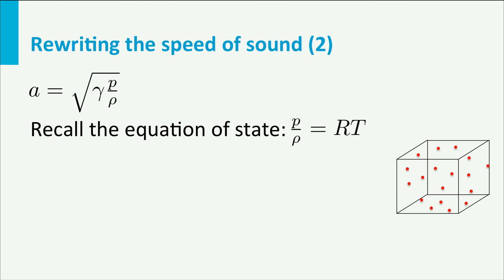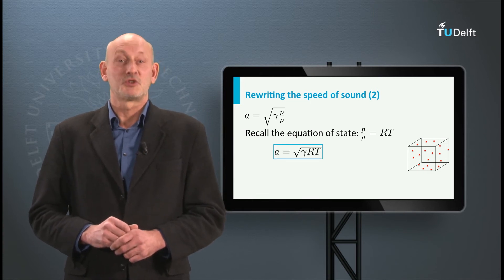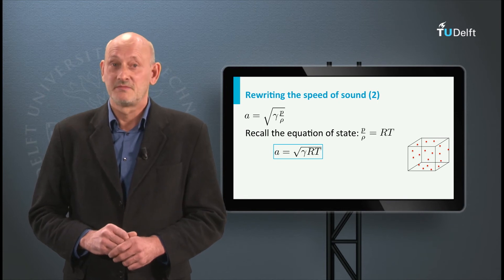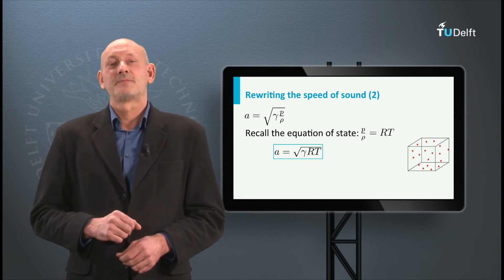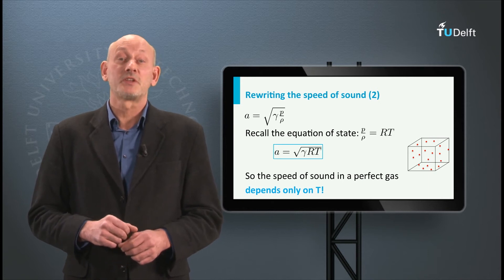We also have the equation of state of a perfect gas p over rho is RT. Hence, for the speed of sound we find the speed of sound A is the square root of gamma RT. And this is a nice result. It shows that the speed of sound in a perfect gas only depends on the temperature T.